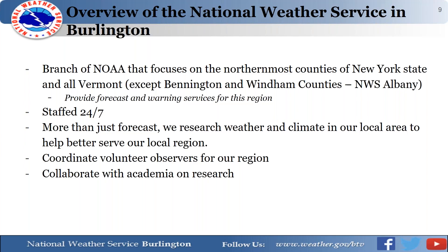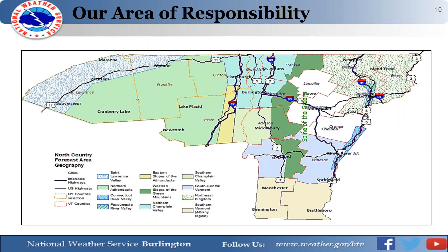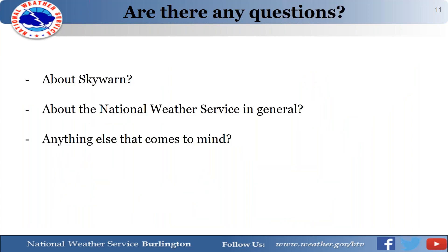Here's a quick map of our area of responsibility, highlighting different terrain features. We have a wide variety of topography — from the Saint Lawrence River Valley to the Adirondacks, through the Champlain Valley, to the Green Mountains, and east to the Connecticut River Valley. This complex terrain plays a large part in our weather forecasts, and we work our best to understand how each terrain feature impacts the region.